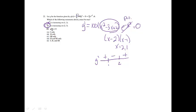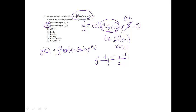For statement III, we need to find g(3) by plugging 3 into the integral formula: the integral from 1 to 3 of 100(t squared minus 3t plus 2) times e to the negative t squared. Using math 9, that gives negative 1.942. Since it said g(3) would be positive but we got negative, statement III is false. So only statement II is correct, which is choice B.